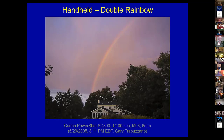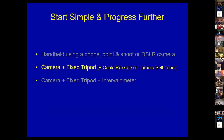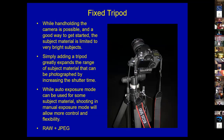As you can see from the handheld section, you're fairly limited in subject material when shooting handheld. Simply adding a tripod can really expand the range of subjects you can photograph by allowing you to increase shutter time. While auto exposure can be used for some subjects, you'll find very quickly that shooting in manual exposure mode gives you far more control and flexibility, especially when bracketing or creating HDR composites.